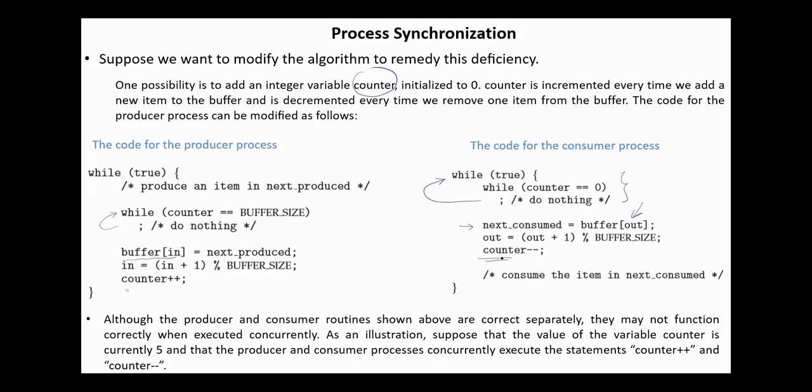If we consider these routines as independent routines, then they are correct. But if they are executed concurrently, they may not function correctly. Suppose, for example, that the value of the counter is 5, and the statements counter plus and counter minus are executed concurrently.